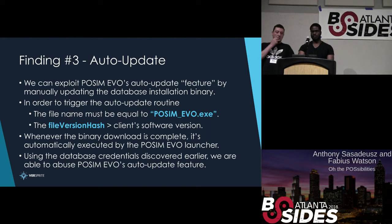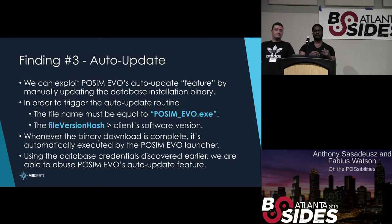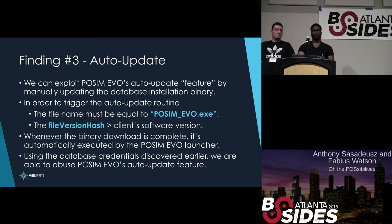To exploit this auto-update feature using our database access from the hardcoded credentials, we need to meet two requirements. First, our binary in the database must be named possum_evo.exe. Second, the file version hash — which is where the application gets the database version number — must be higher than the client's version. Whenever the binary is downloaded by the user after they decide to update, Possum simply triggers that executable and launches it. Here's a demo of that in action.